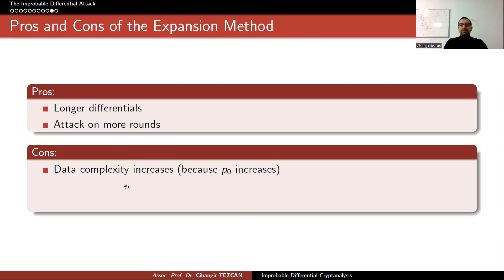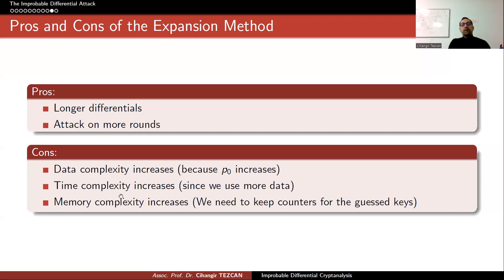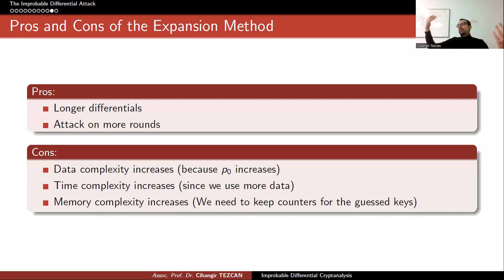The negative part of this expansion method is that data complexity increases because p0 increases. At the impossible case, you can definitively determine if a key is correct — if you observe the differential, it cannot be the correct key. But now for the correct key you can still observe the differential, so you need more data to distinguish the two binomial distributions. More data means more operations, so time complexity also increases. Finally, memory complexity increases because now you need to keep counters for all candidate keys until the end of the attack, then sort them from lowest to highest — the lowest counter is most probably the correct key.